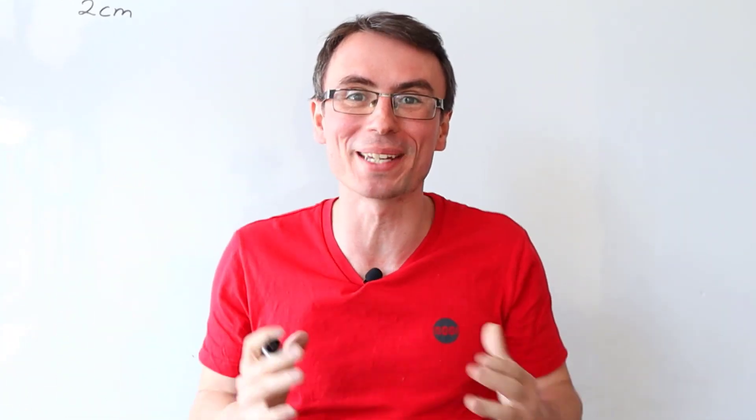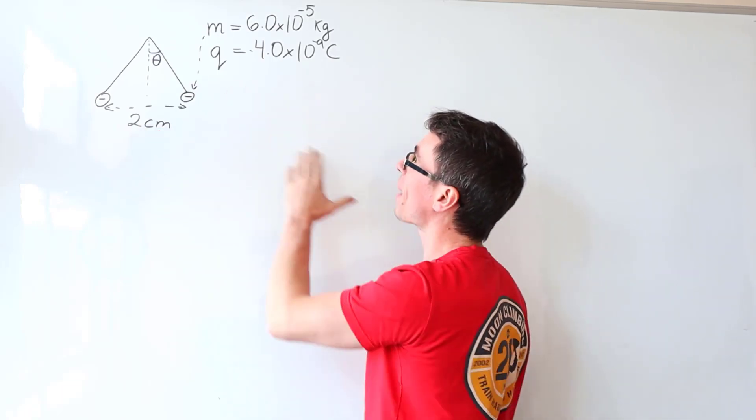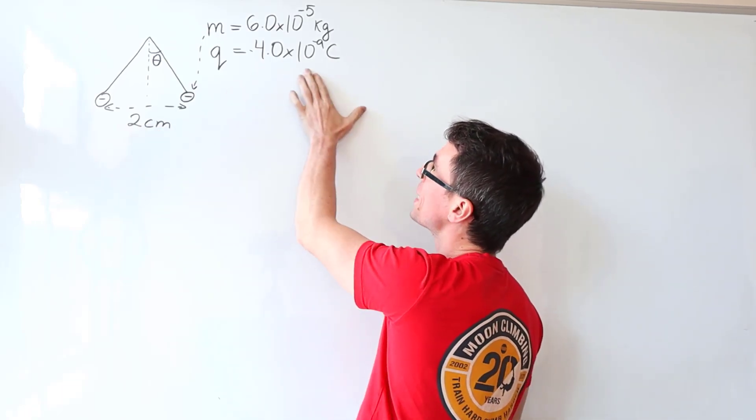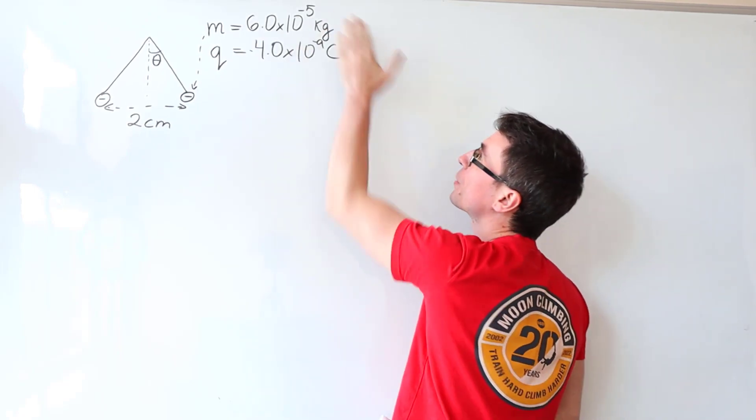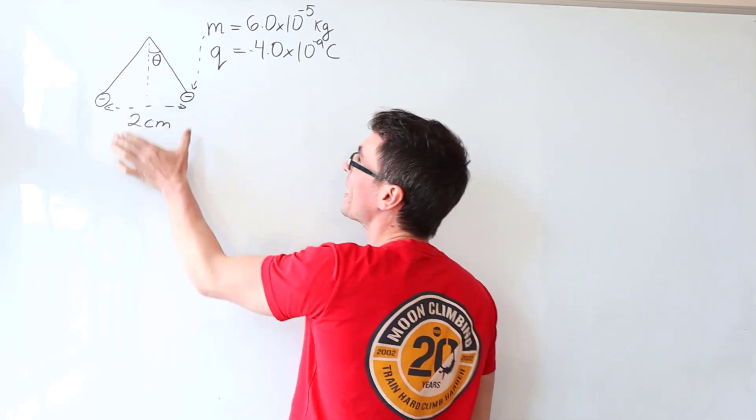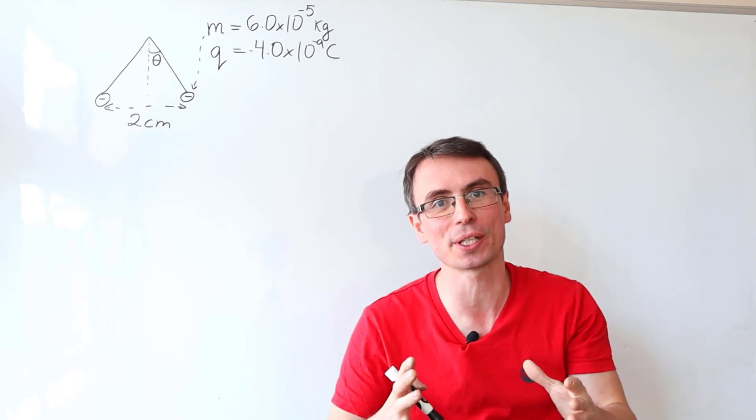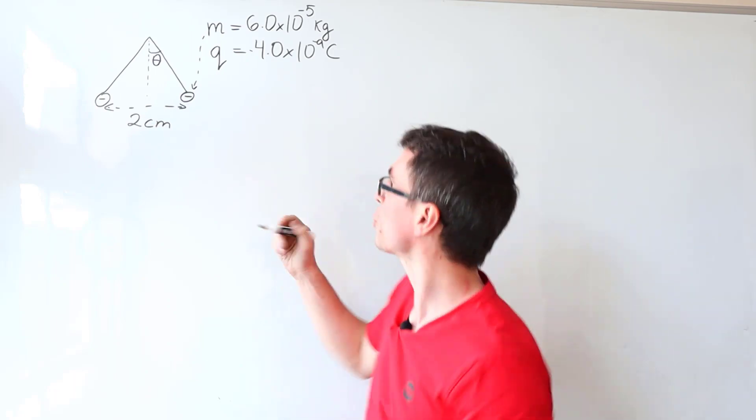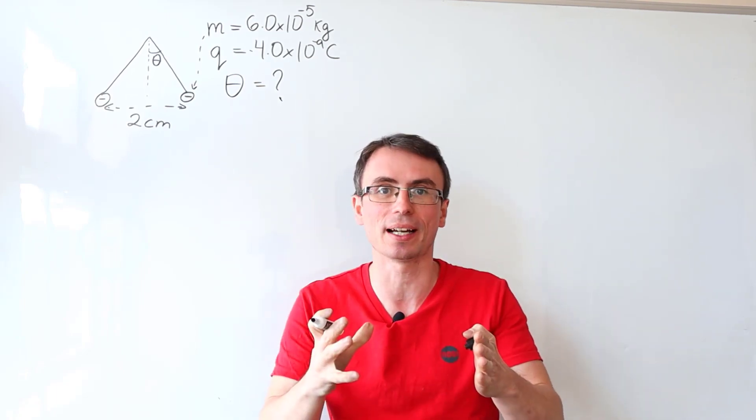Let's have a look at a crucial electric fields problem in A-level physics. We have two identical spheres, both of them have a charge of minus 4 nanocoulombs and they also have a mass of 6 times 10 to the negative 5 kilograms. They're connected with a string and they are at rest in this configuration. What we need to do is figure out the angle theta.